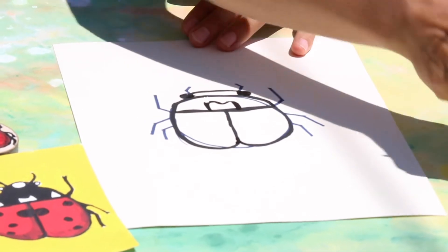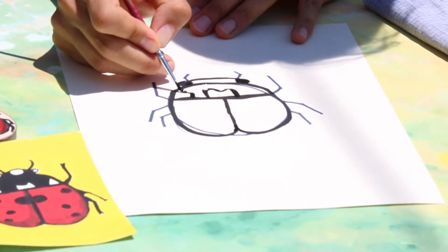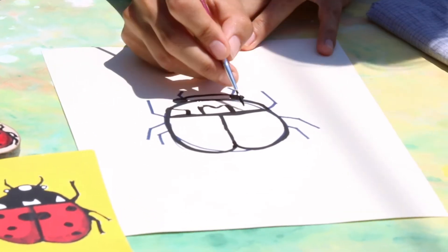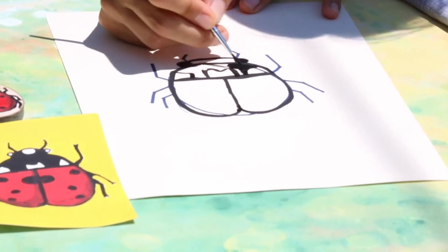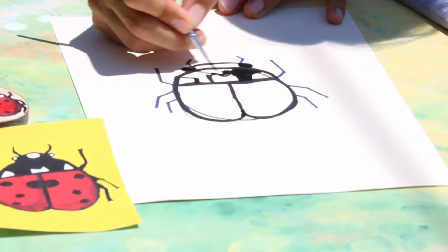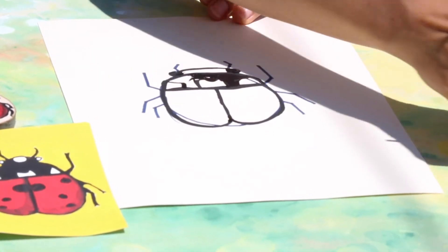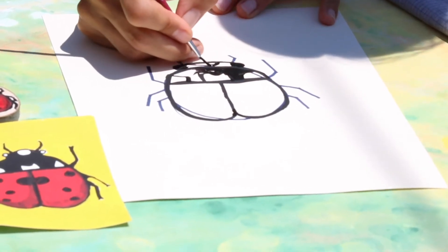I'm just going to draw a little M there, kind of little square type spots there, and then fill in the rest black.